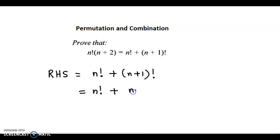We can write this term as n plus 1 into n factorial. For example, 6 factorial could be written as 6 times 5 factorial. Similarly, n plus 1 factorial can be written as n plus 1 times n factorial.